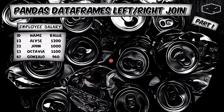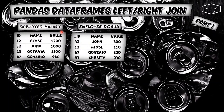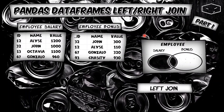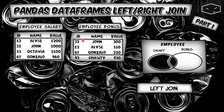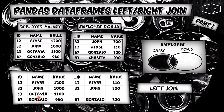In this video we will use two data frames: salary and bonus. A left join is represented like this — we take all the rows of the left data frame and join with those that exist in the right data frame. The last row of the right data frame will not appear in the final result because it doesn't exist in the left data frame. Notice that Octavia doesn't have any value because she doesn't appear in the right data frame.